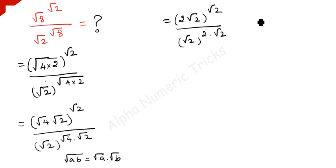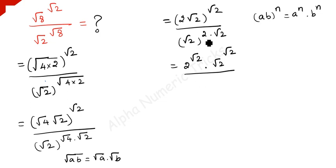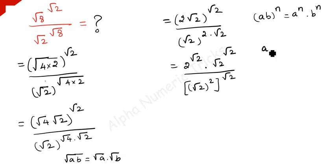Again, you have to use the formula: (ab) to the power n can be written as a to the power n times b to the power n. Using this formula, you can write this as 2 to the power square root of 2, times square root of 2 to the power square root of 2, divided by — combining those two terms — square root of 2 squared, whole to the power square root of 2. That uses the identity: a to the power m times n equals a to the power m, whole to the power n.